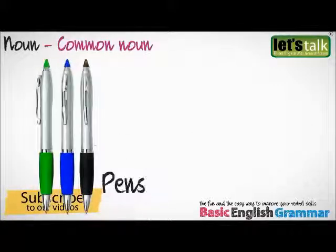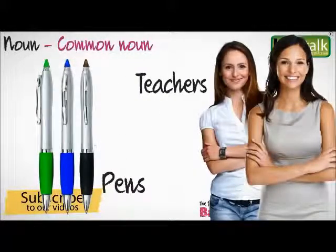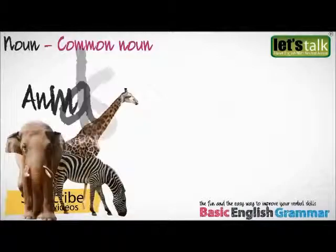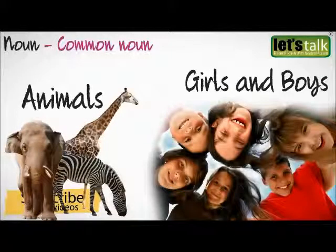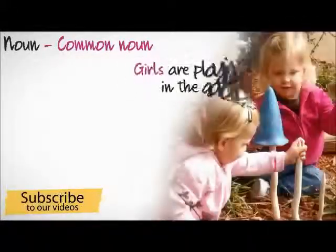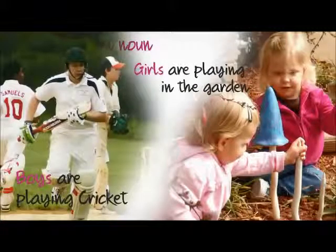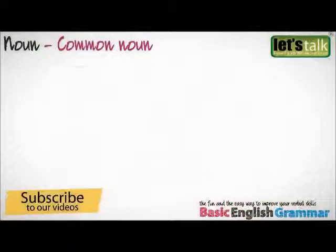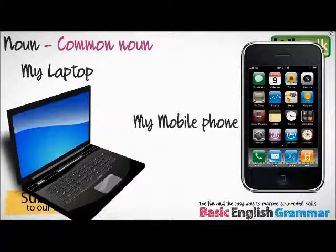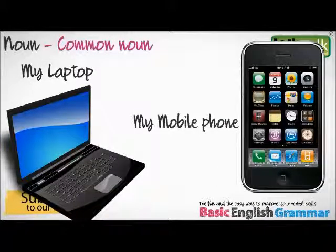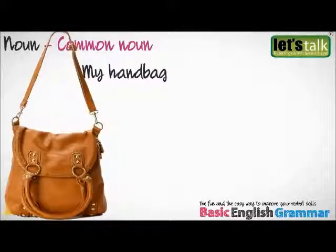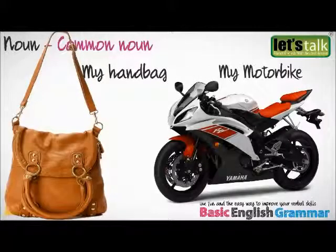For example: pens, teachers, animals, girls, and boys. Girls are playing in the garden; boys are playing cricket — in these sentences, girls and boys are both common nouns. My laptop, my mobile phone — laptop and mobile phone are common nouns. My handbag, my motorbike — handbag and motorbike are both common nouns.